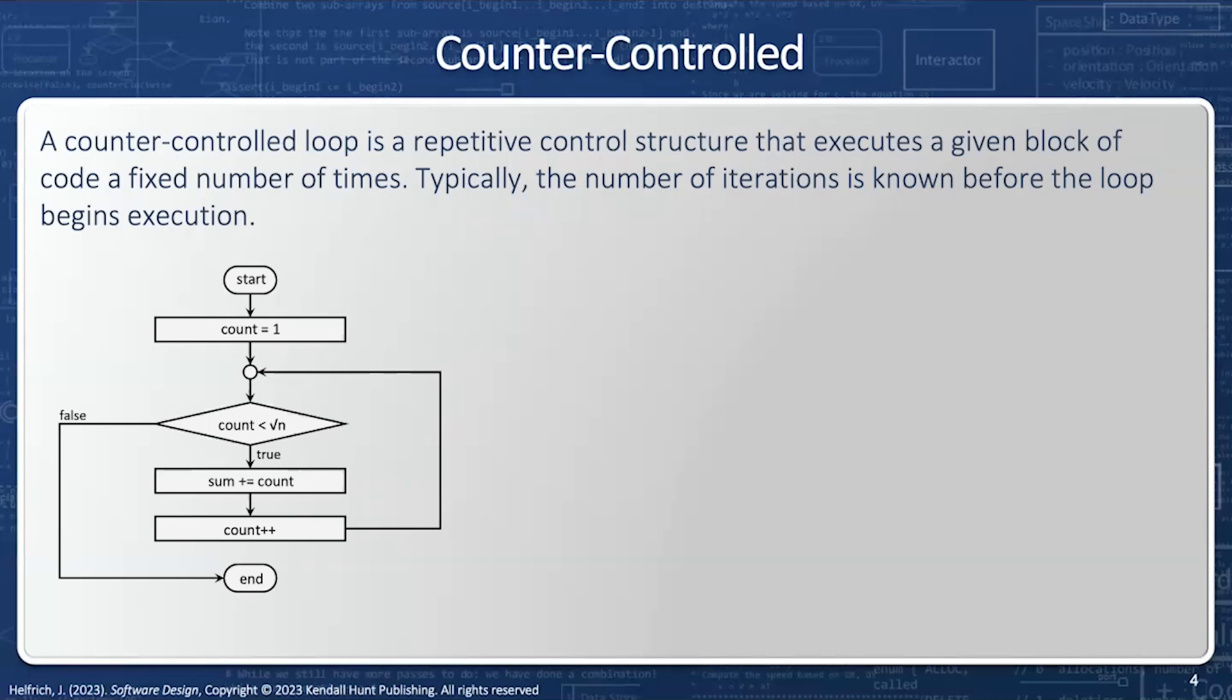The next is a counter control loop. A counter control loop is a repetitive control structure that executes a given block of code a fixed number of times. Counter control loops have four components. The first is the start. I want to know when the counting begins. The second is the end. I want to know when the counting ends.